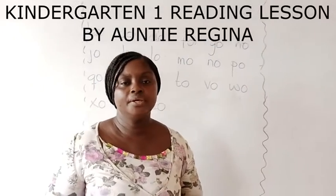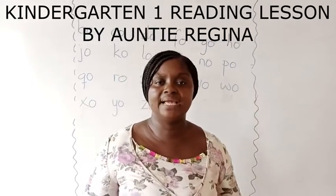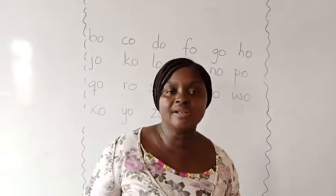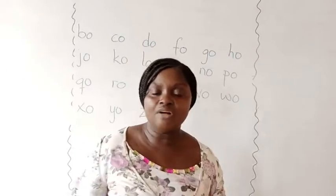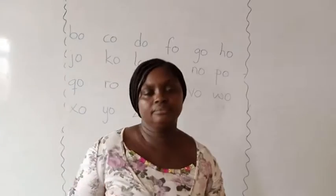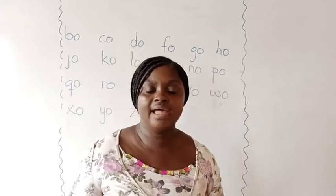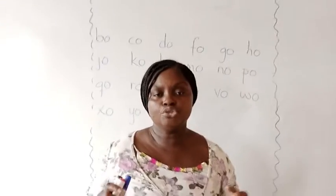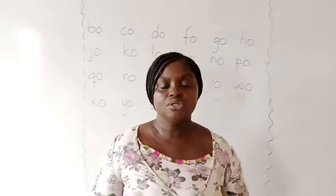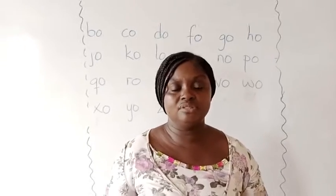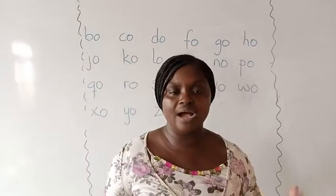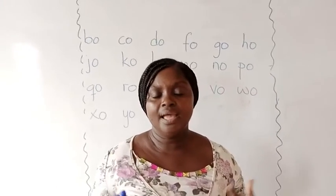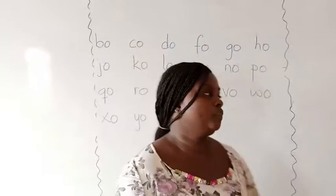Hello learners. Today we are going to learn how to blend our sounds, as we did last time. We were able to put consonants and vowels together — the vowel A and the vowel E. We were able to blend these two letters to form sounds. We are going to do the same thing today. We are going to use all our consonants, then we add vowels to them and sound them.